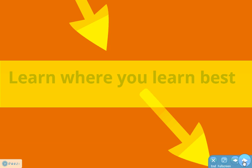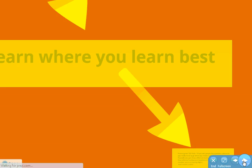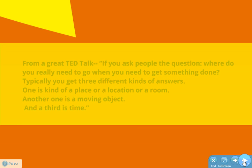Video learning and online learning allow students to learn where they learn best. From a great TED talk, the quote is: 'If you ask people the question, where do you really need to go when you need to get something done, you get three different types of answers: one is a kind of place or location or room, another is a moving object, and a third is time.' Video learning allows kids to learn wherever they feel most comfortable and most confident — whether it's in their room, in the library, in the classroom, outside. They go to a place, and in that place, that's where they're most ready to learn.